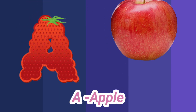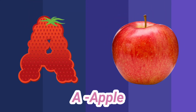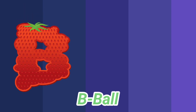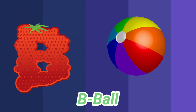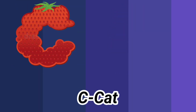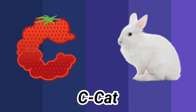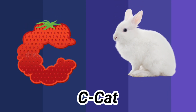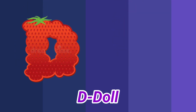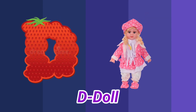A is for apple, a-a-apple. B is for ball, b-b-ball. C is for cat, c-c-cat. D is for doll, d-d-doll.